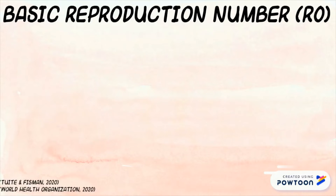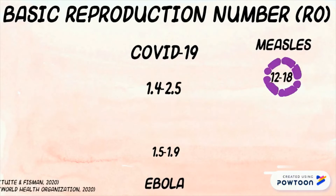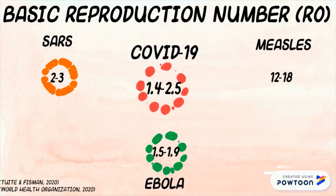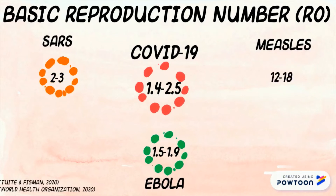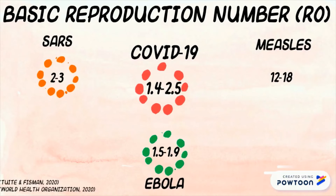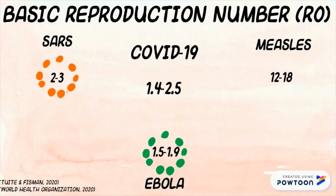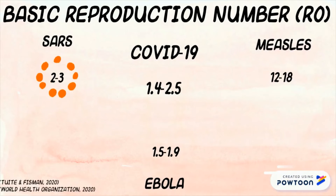The R0 value for COVID-19 has been reported by the World Health Organization to be 1.4 to 2.5. But values up to 4.08 have been estimated due to the unknown basic properties of the pathogen and cases missed due to late onset of symptoms.